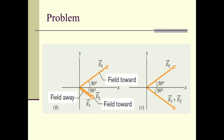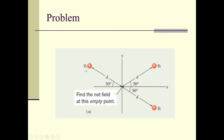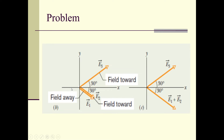Now let us talk about direction. Going back to the previous slide: q1 is a positive charge. As discussed in the last lecture, for a positive charge the electric field lines always point away — outward. So the field from q1 at the origin points away from q1, i.e., outward from q1 toward the origin side. For q2, which is a negative charge, the electric field direction is towards q2, meaning it also points outward from the origin. So both E1 and E2 point outward from the origin — they are in the same direction.